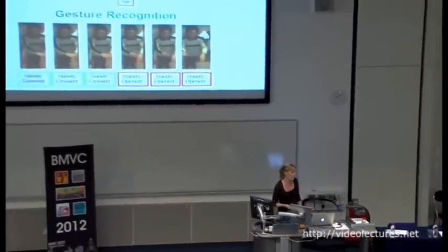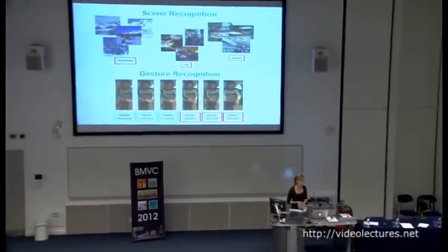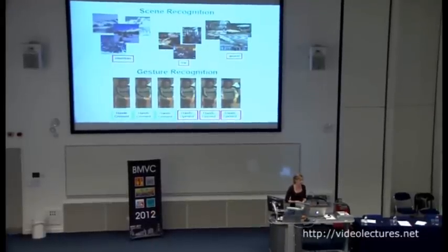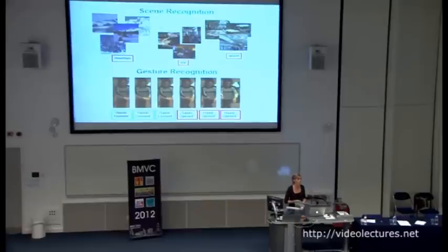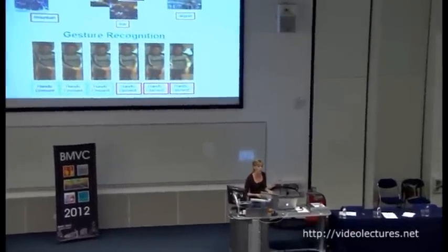These are two typical examples that vision researchers would like to solve. One is scene classification, where you have scenes and want to say what kind of scene an image contains. Another example of structure prediction is that you have a video sequence and want to predict at each point in time what gestures are being performed.